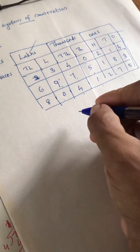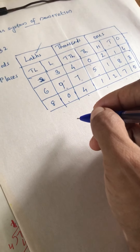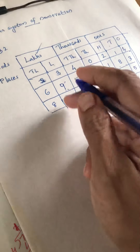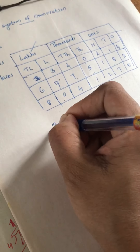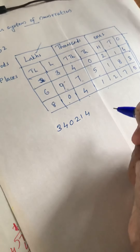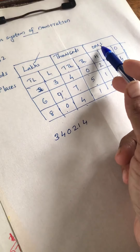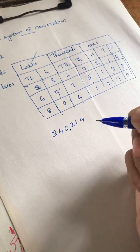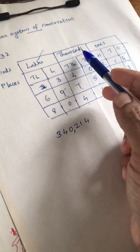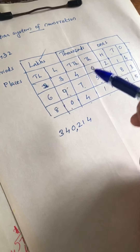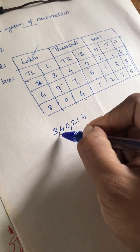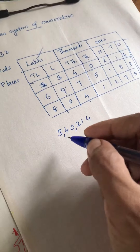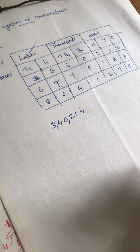In the international system, we insert a comma after each three places. But in the Indian system, we insert a comma differently. For example, writing the number 3, 4, 0, 2, 2, 1, 4 — after the ones period of three places, we insert the first comma. Next, in the thousands period, there are only two places: thousands and ten thousands. So after those two places, we insert another comma. That is the difference of inserting commas in the Indian and international systems.